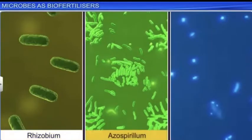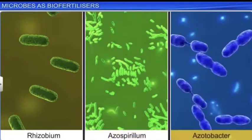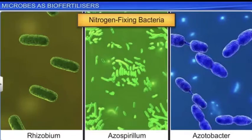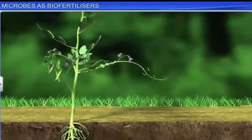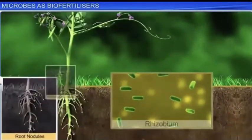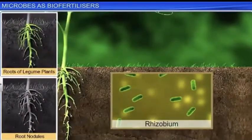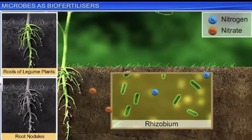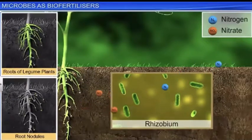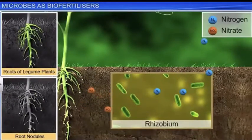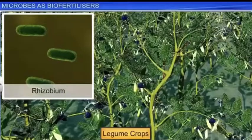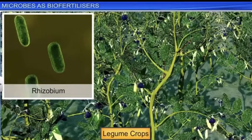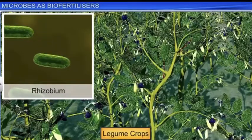Rhizobium, Azospirillum, and Azotobacter are the most commonly used nitrogen-fixing bacteria in biofertilizers. Rhizobium bacteria exist symbiotically in the root nodules of leguminous plants, where it converts atmospheric nitrogen into usable organic forms for plant use, in return for food prepared by plants via photosynthesis. It is usually used as an inoculant for legume crops.